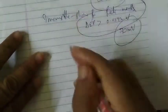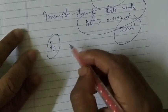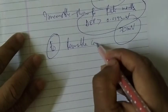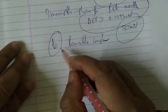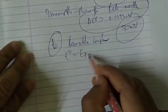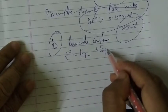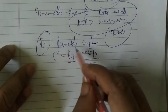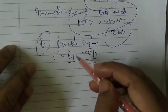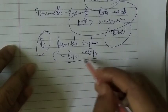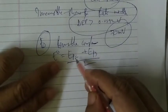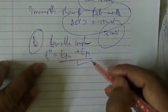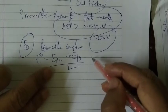The formal reduction potential E° for a reversible complex is given by E° = (Epc + Epa) / 2. This is the standard electrode potential, calculated as the average of the cathodic and anodic peak potentials.